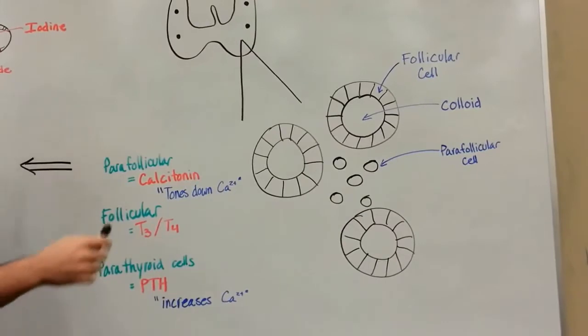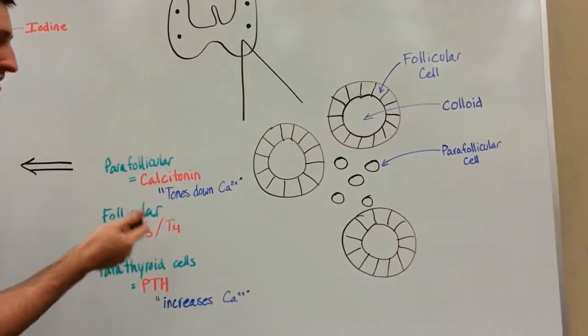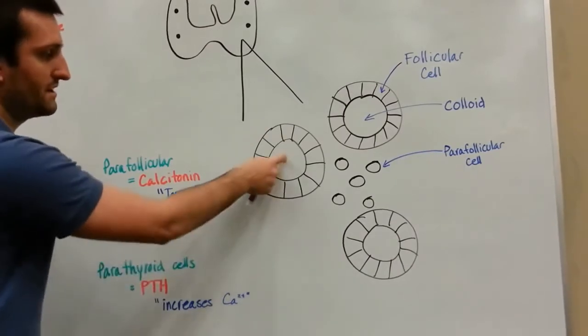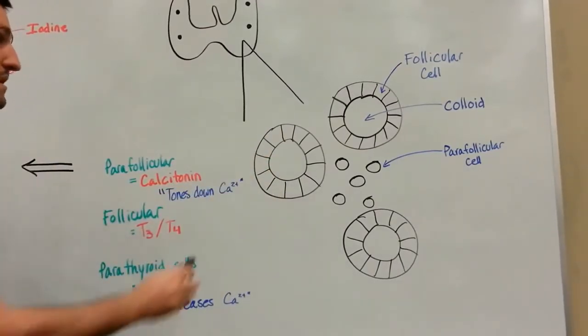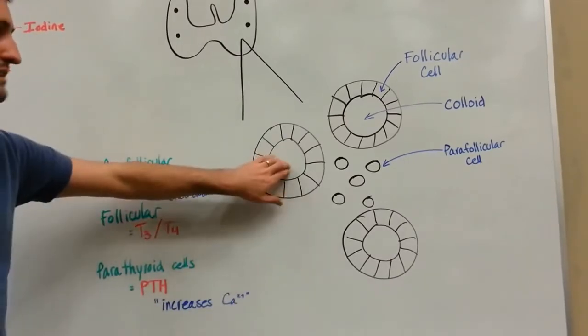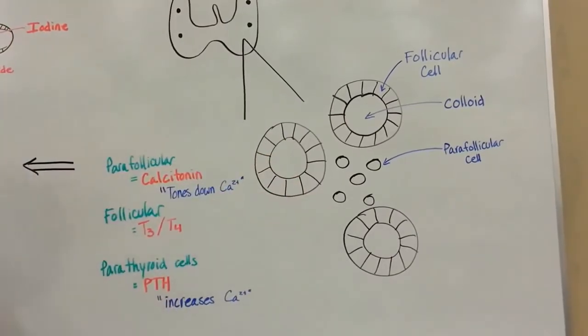Those follicular cells will have a function in the secretion and synthesis of the hormone that gets pumped into these lakes for storage. Next you're going to see cells that are not touching these colloid lakes. Those are going to be called parafollicular cells.